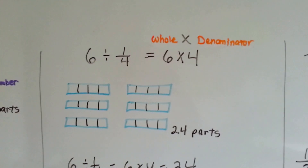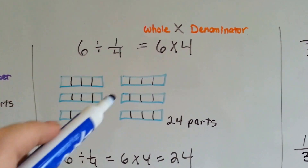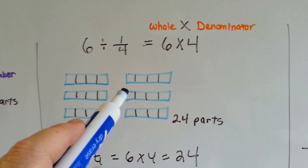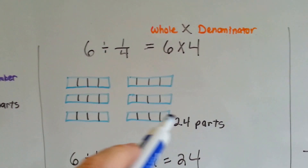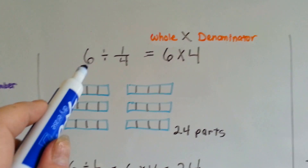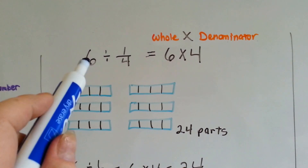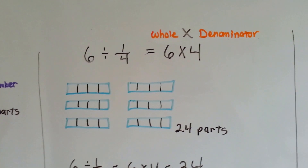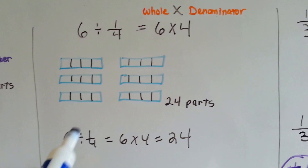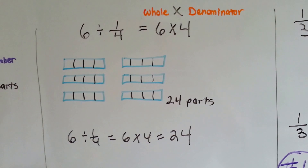Now we've got the whole number first. We've got a 6 divided into 1 fourth. That means we've got 6 bars divided into 1 fourth parts — that's going to create 24 parts. So when you see the whole number first, just think of it as the whole number times the denominator and you've got your answer. It's that fast. 6 divided by 1 fourth is the same thing as 6 times 4. It equals 24.